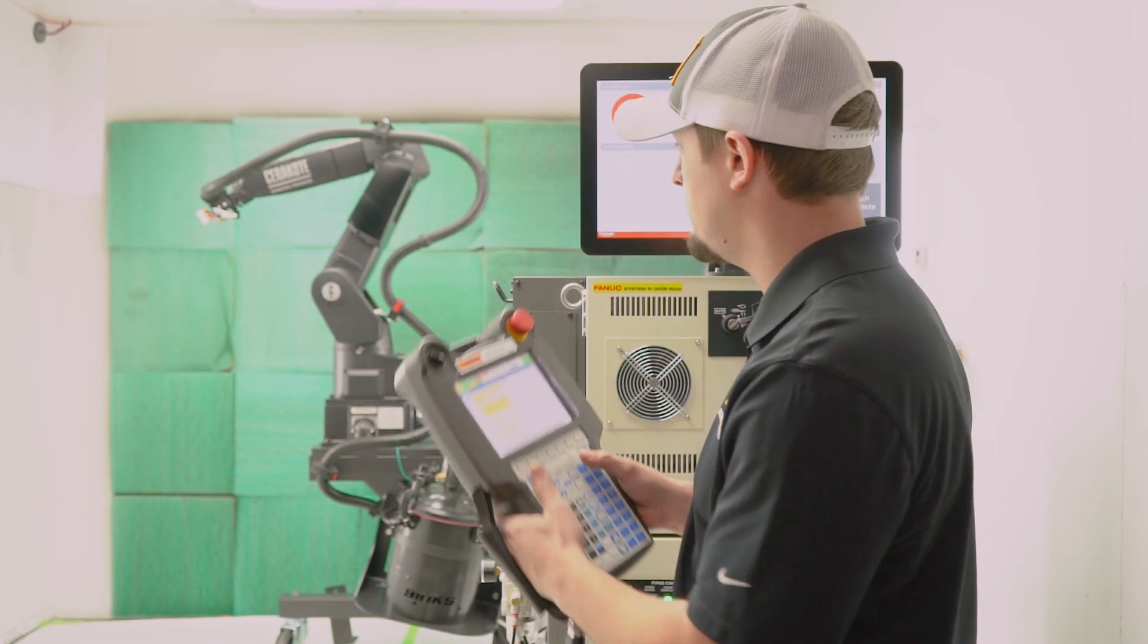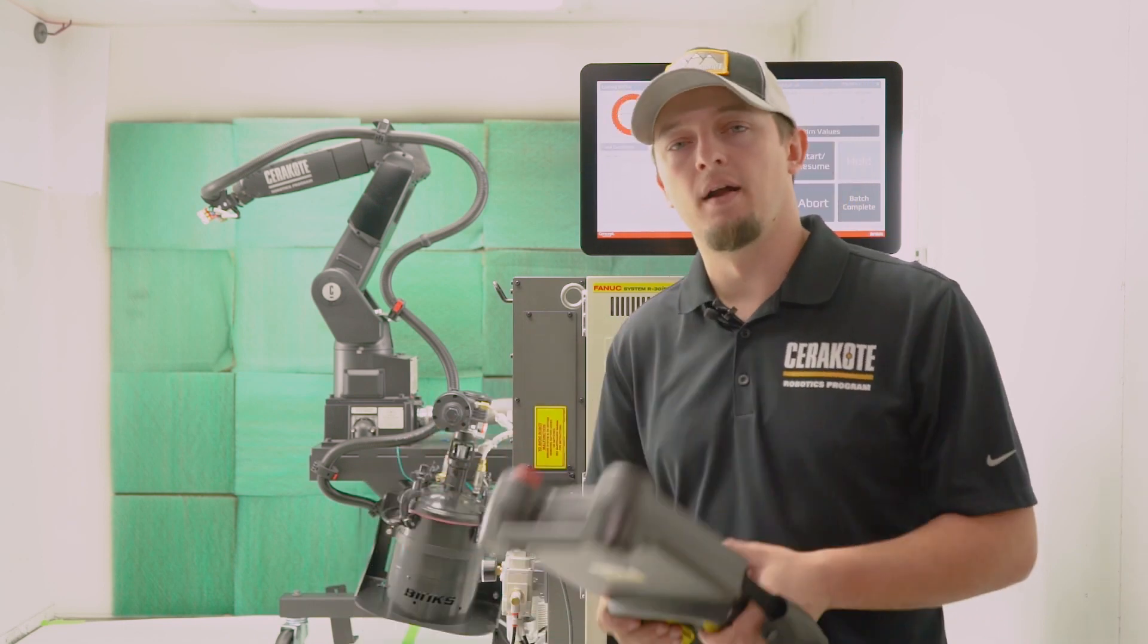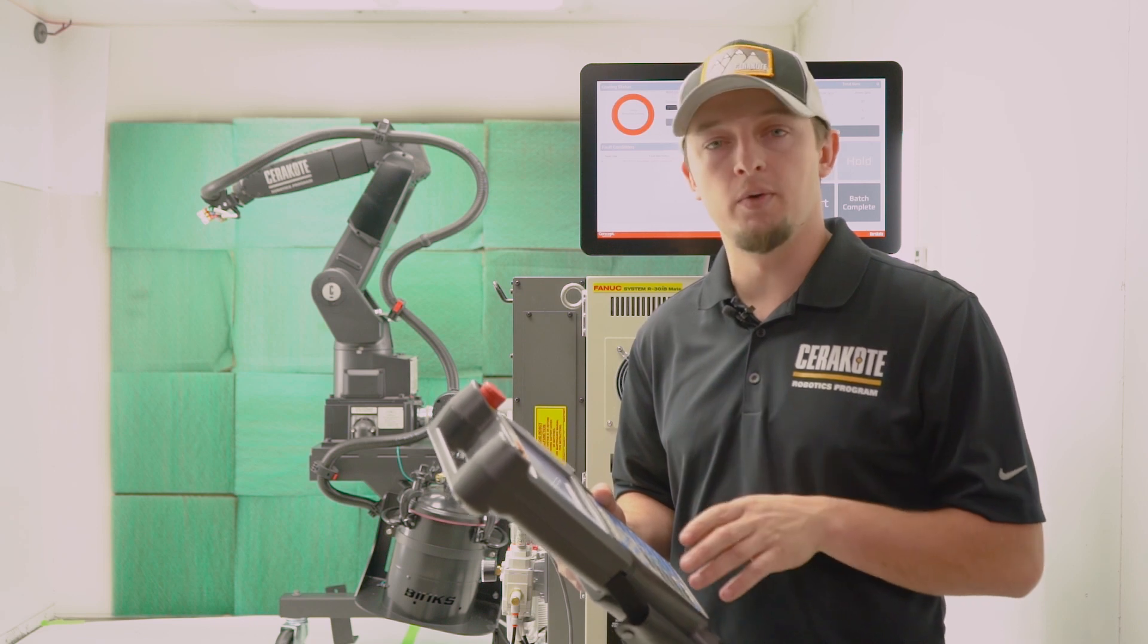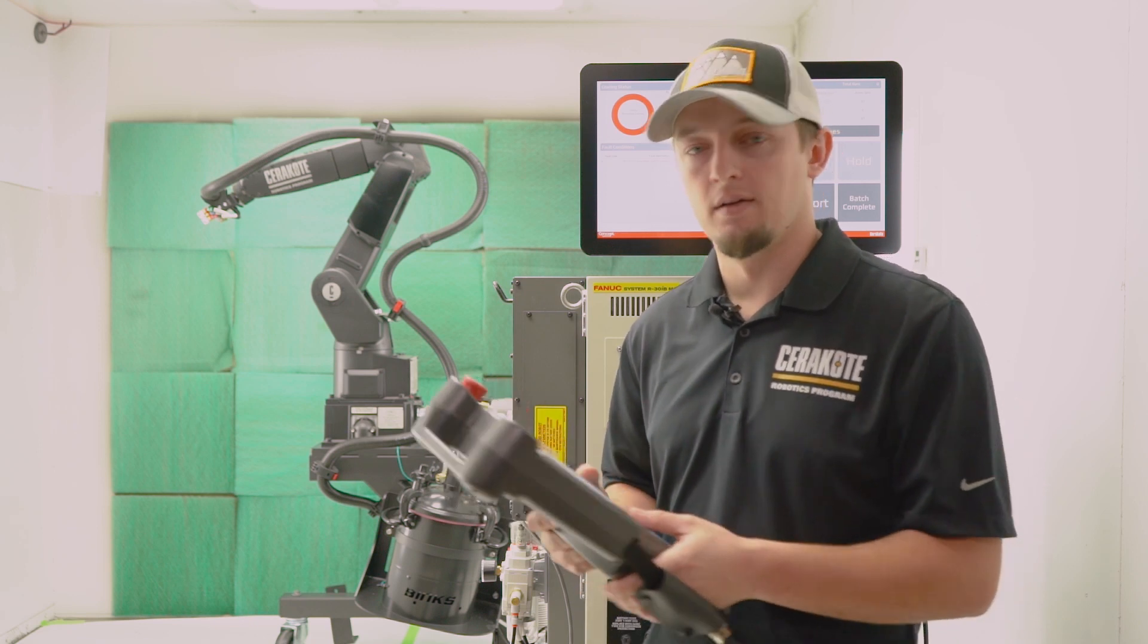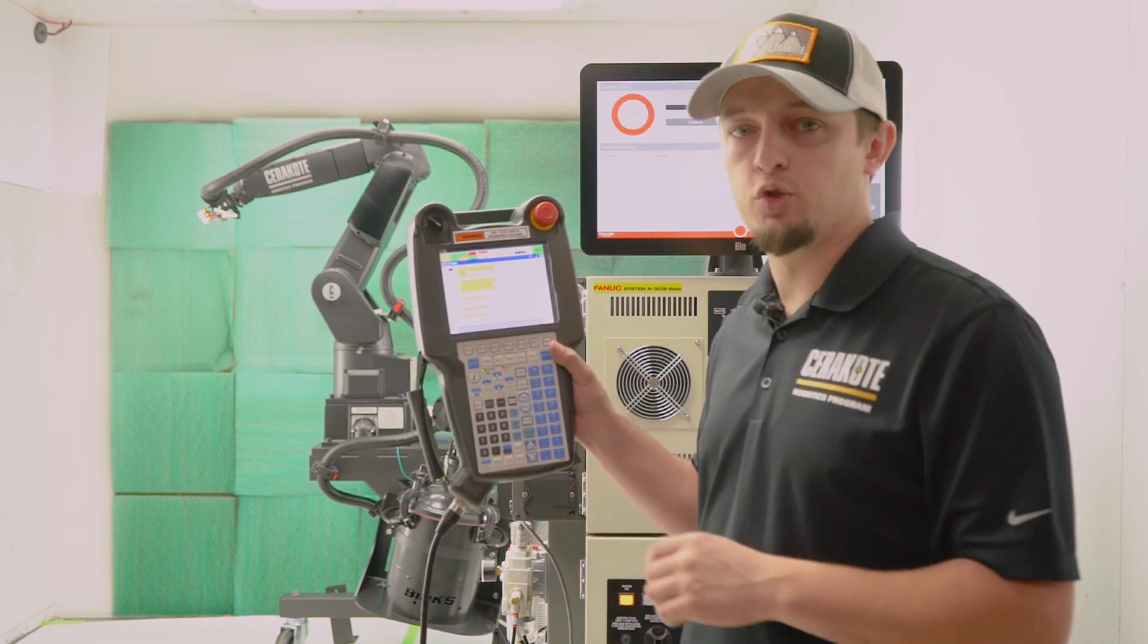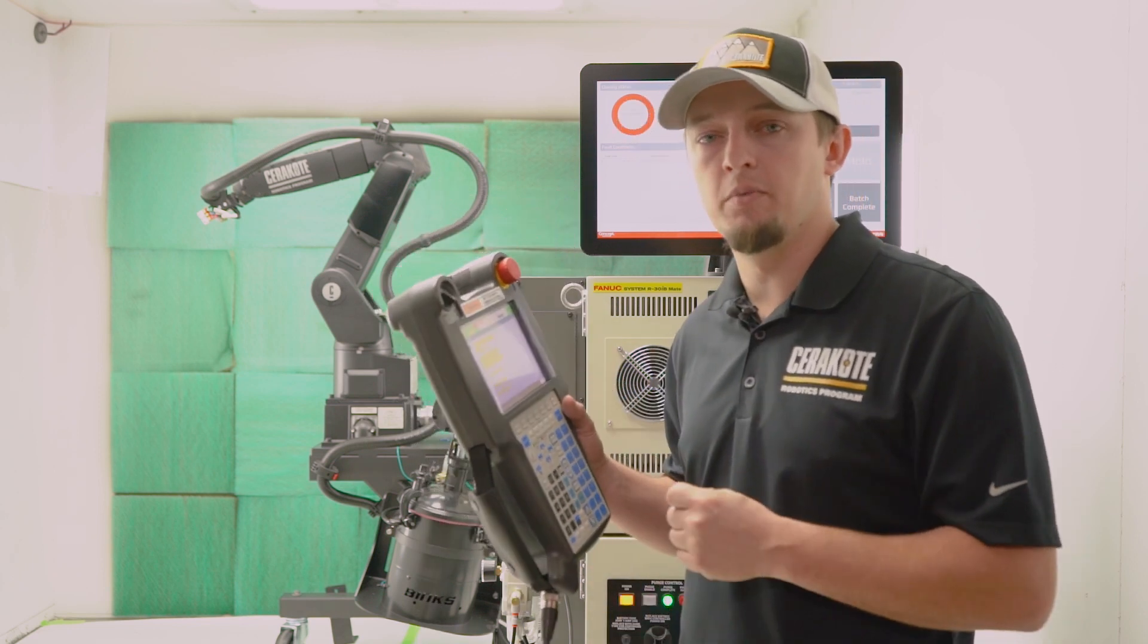Okay, so that's jogging the robot. We're going to go ahead and jog to group 2 now, which is the turntable. Okay, so we're going to do that by selecting the group button, and we're now going to be in G2 joint, and then we'll walk over to the turntable so you can actually see that move.